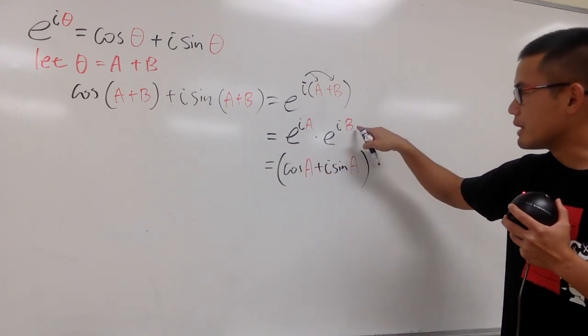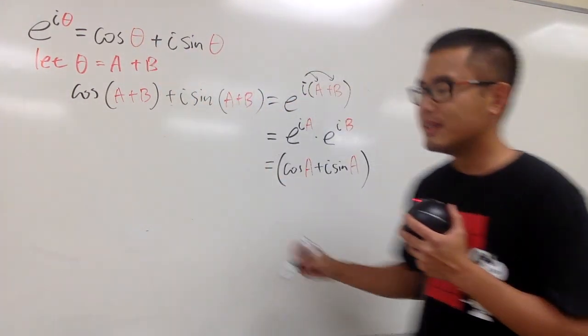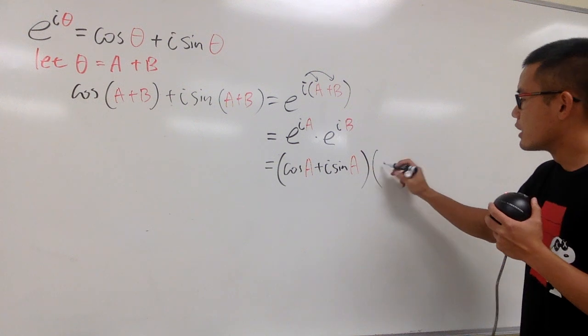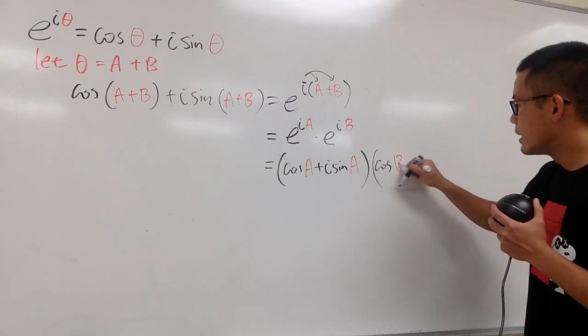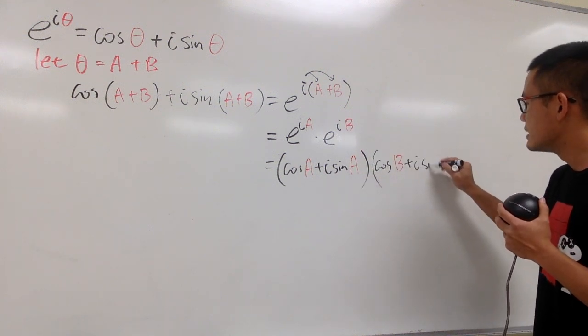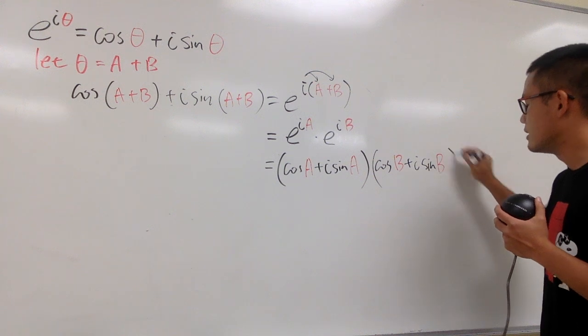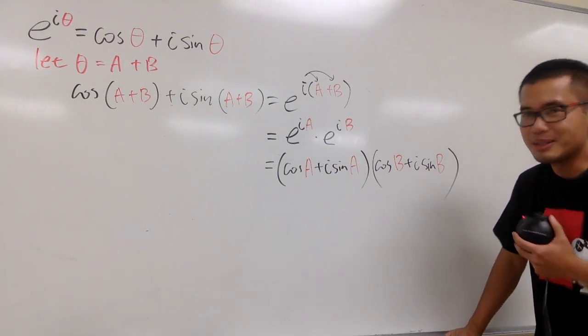And then for this, I will have to go ahead and plug in b into the theta. So, we multiply this by cosine b plus i sine b. This is pretty cool, isn't it? What am I doing? I don't know.